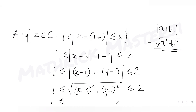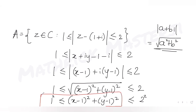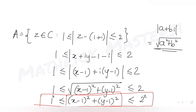Squaring both sides, the square root disappears and we get: 1 ≤ (x - 1)² + (y - 1)² ≤ 4. This is the equation of a circle. Since (x - 1)² + (y - 1)² ≥ 1, the region is outside or on the inner circle.